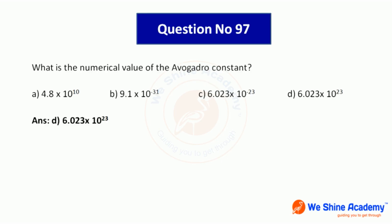Question 97: What is the numerical value of Avogadro's constant? Avogadro's constant is 6.023 × 10²³. Answer option B, 6.023 into 10 to the power of 23.